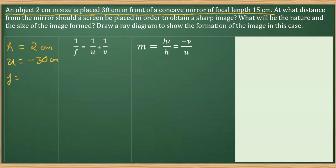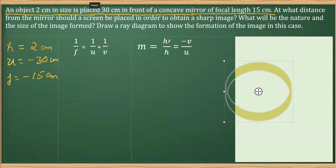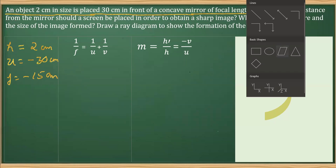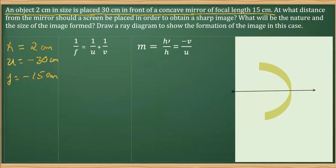The concave mirror has a focal length of 15 centimeters, so f is minus 15 centimeters. For a concave mirror, the focal length is on the left-hand side of the mirror. The focal length of a concave mirror lies to the left of the pole, and that's why we take f as negative. All distances are measured from the pole of the mirror, and from the new Cartesian sign convention, f should be taken as negative.